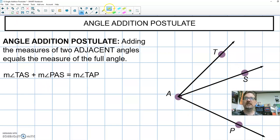What this says, if we take the measure of angle TAS, let's trace that out, TAS, this inside angle, plus the measure of angle, the M stands for measure, how many degrees it is, and angle PAS, that equals the measure of angle TAP, the degrees in this outside angle. Yellow plus blue equals green, part plus part equals whole thing.